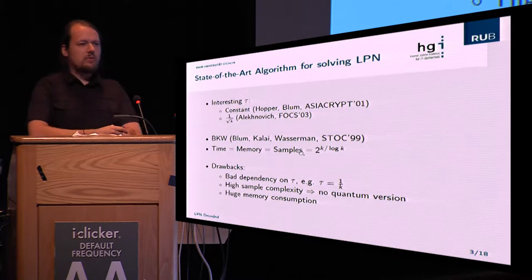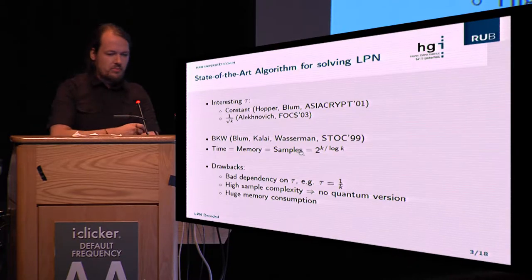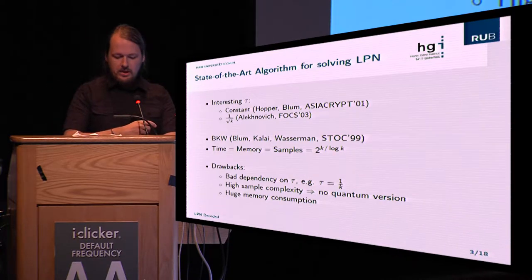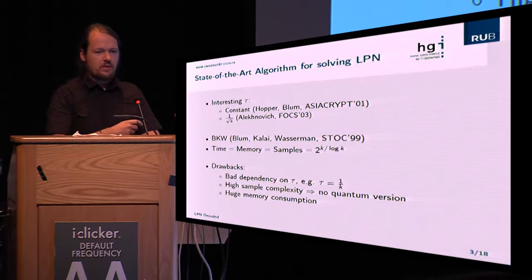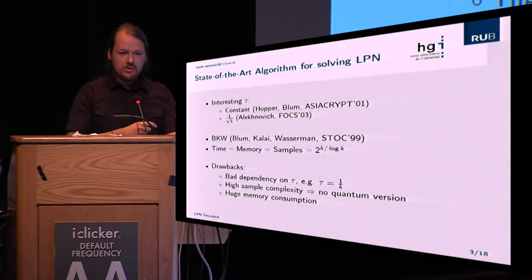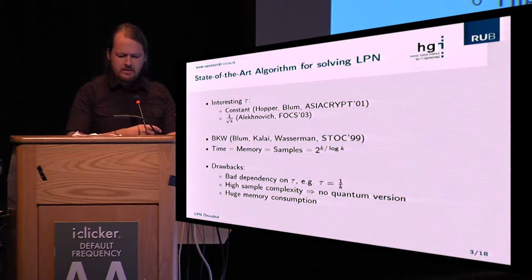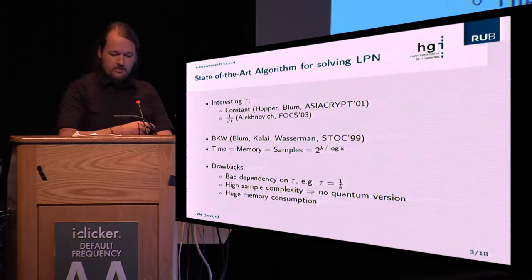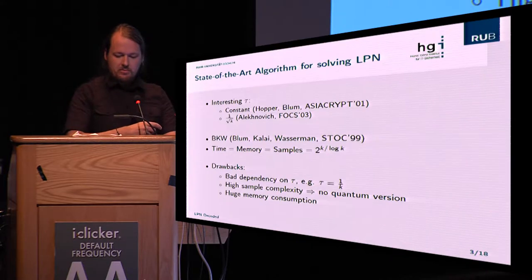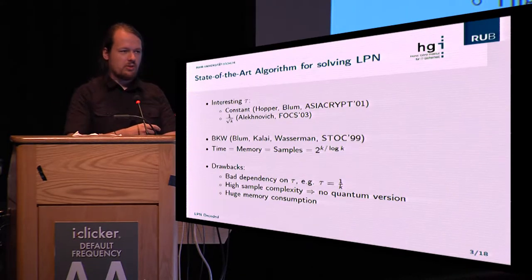What can we do with the LPN problem? We can create authentication protocols like the HB protocol, which uses a constant noise rate τ of something like 1/4 or 1/8. We can also do encryption with this — for example the scheme published by Alekhnovich, which uses a diminishing noise rate of 1/√k.